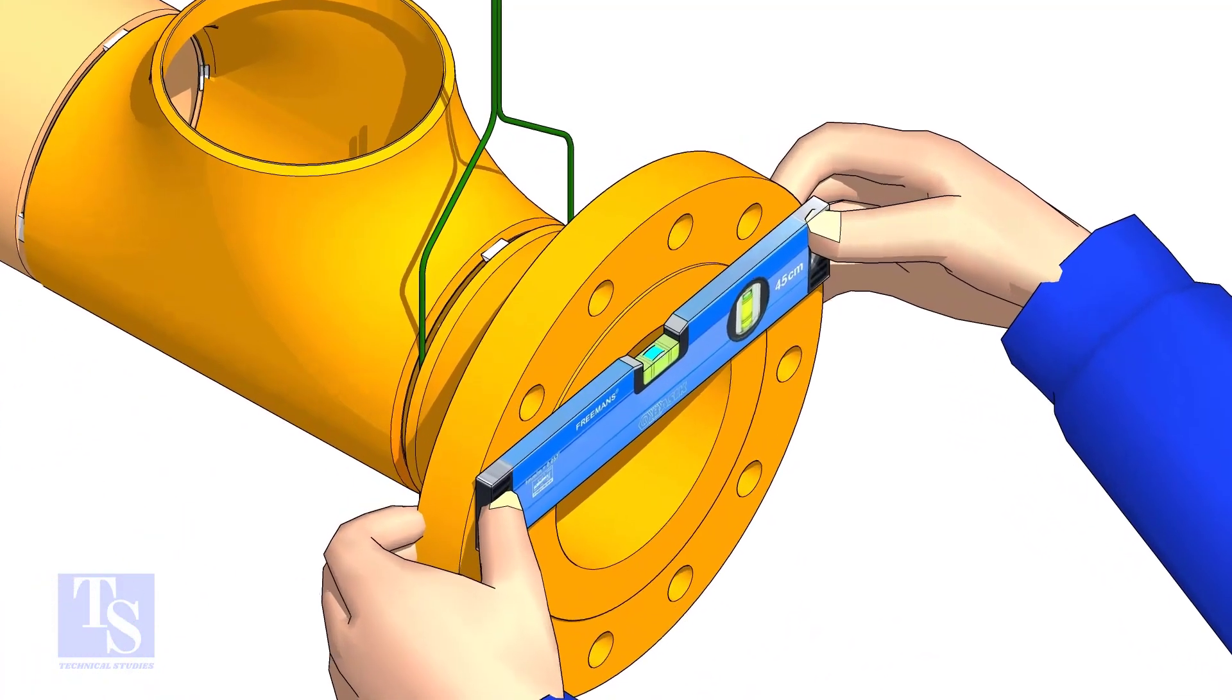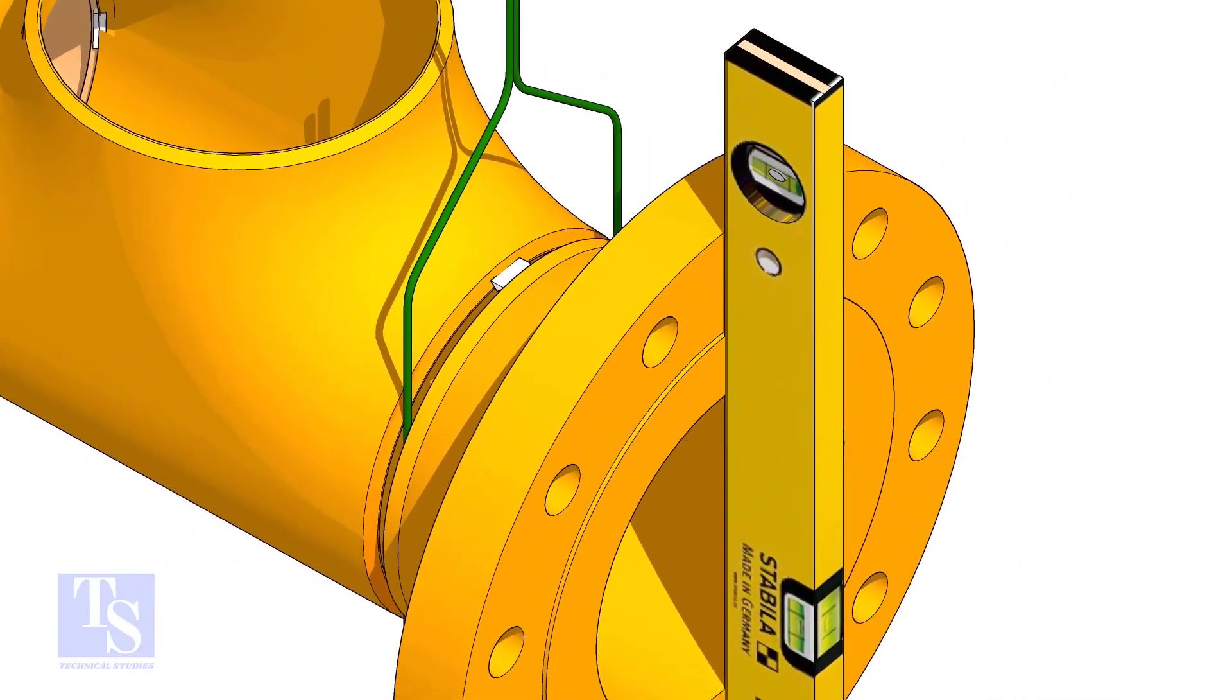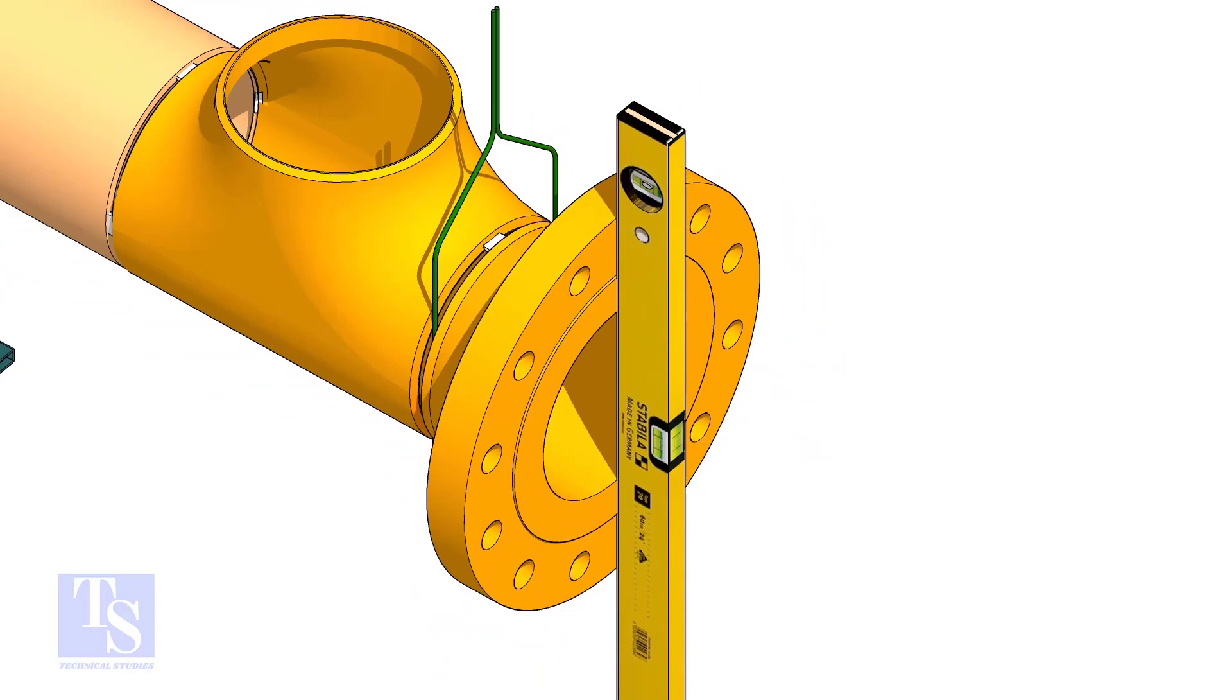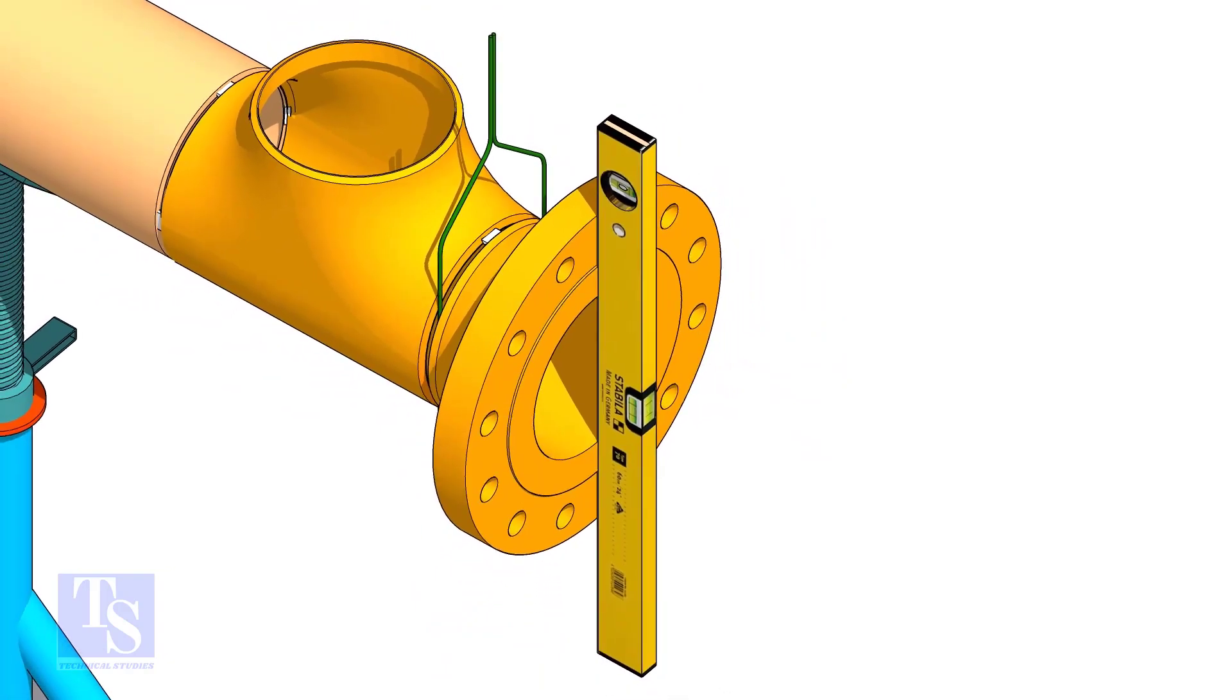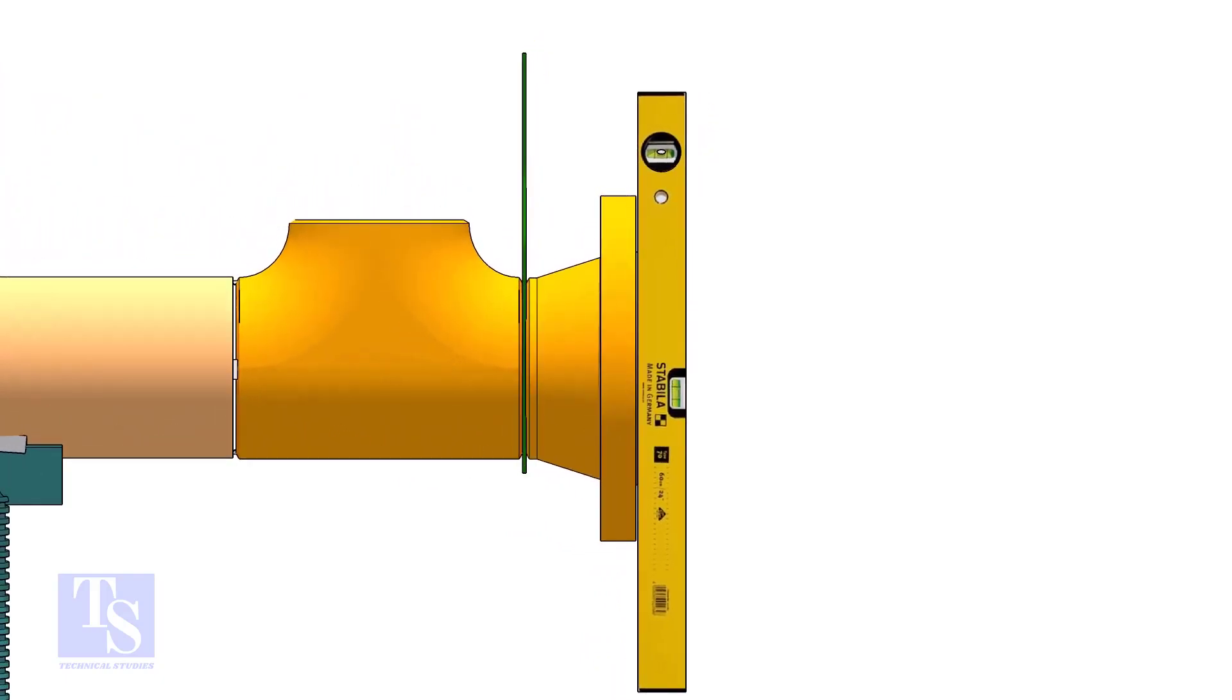Tack weld on the top side of the joint. Maintain the vertical level of the flange. Tack weld in the bottom side of the joint.